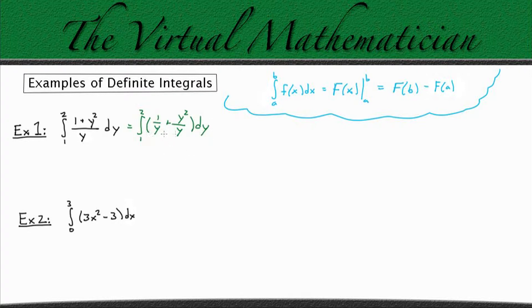Now recall that since our functions inside the integral are separated purely by an addition, we can rewrite this as two different integrals. So I'm going to rewrite this as the integral from 1 to 2 of (1 over y) dy plus the integral from 1 to 2 of y, because y squared divided by y is just going to give us y.